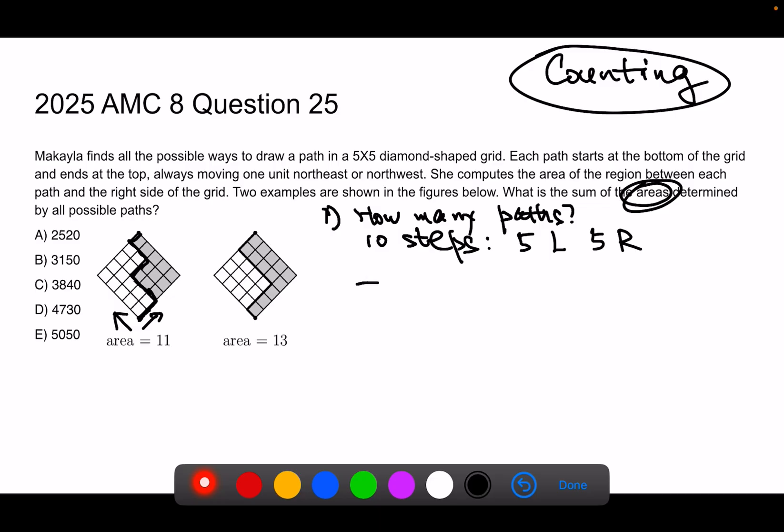So we can now turn this path question into a counting question. I have 10 steps, and I need to pick five of them to be left. The remaining five will be right. And how many ways can I do it?